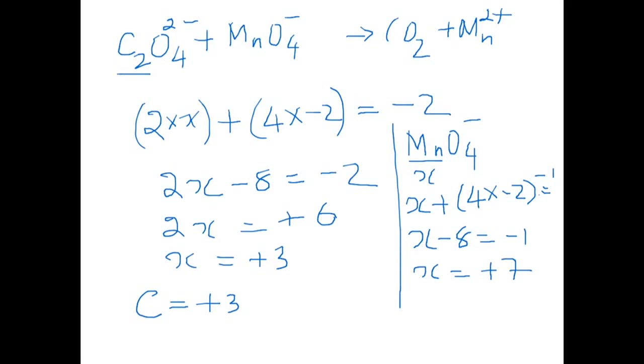So we have the oxidation number of carbon plus 3, manganese plus 7. In the product side, the oxidation number of carbon is going to be, let's look, CO2, the net charge is 0. x plus 2 times minus 2 is equal to 0, x minus 4 is equal to 0, so x is equal to plus 4. So you have oxidation number plus 4 for carbon in carbon dioxide.